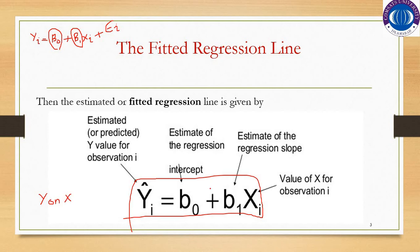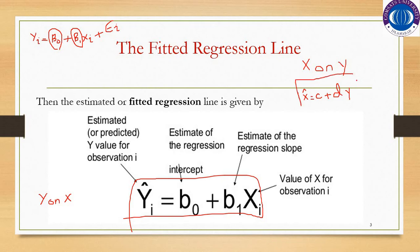This is called y on x. If you want to regress x on y, the line would be x on y, and it would be x hat equal to c, where c is the intercept, plus d into y. So this is the fitted regression line for x on y, and c and d are the estimated values for the parameters of the regression line x on y.